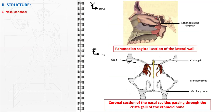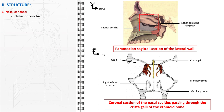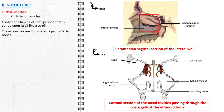The nasal conchi, also known as turbinates, are crucial structures within the nasal cavity, playing vital roles in air filtration, humidification, and temperature regulation. They consist of the inferior, middle, and superior conchi, each with distinct characteristics. The inferior nasal conchi consist of a lamina of spongy bone curled upon itself like a scroll. These conchi are considered a pair of facial bones as they articulate with the maxillary bones and project horizontally into the nasal cavity.